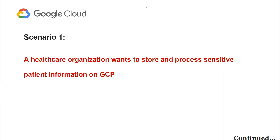An example of when to build a landing zone on GCP would be a healthcare organization that needs to store and process sensitive patient information. The organization would need to comply with HIPAA regulations, which require specific security and compliance controls. By building a landing zone on GCP, the organization could ensure the necessary infrastructure is in place to meet these requirements, protect patient data, and deploy workloads to multiple environments such as development, staging, and production with consistency across all environments.